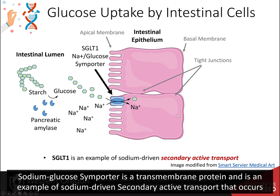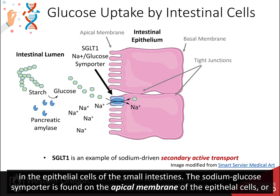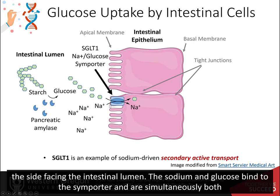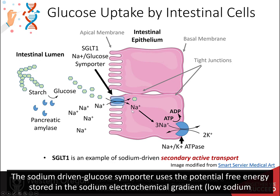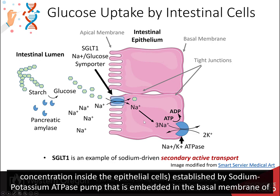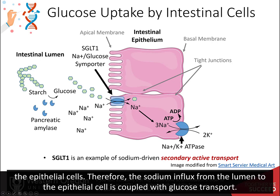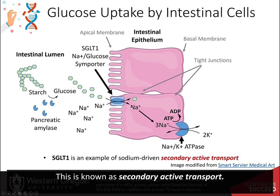The sodium-glucose importer is a transmembrane protein and an example of sodium-driven secondary active transport occurring in epithelial cells of the small intestines. Found on the apical membrane, facing the intestinal lumen, sodium and glucose bind to the importer and are co-transported simultaneously into the epithelial cells. This importer uses the potential free energy stored in the sodium electrochemical gradient — the low sodium concentration inside the epithelial cells — established by the sodium-potassium ATPase in the basal membrane. This coupling of sodium influx with glucose transport is known as secondary active transport.